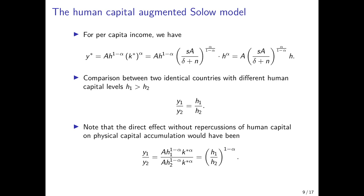Had we used the production function directly without computing steady-state physical capital, the difference would only be determined by differences in human capital raised to the power of 1 minus alpha — a smaller effect. The reason is that differences in human capital between two countries also induce differences in physical capital stocks per worker, even for identical saving rates and productivity. Disregarding this indirect general equilibrium effect would lead to an underestimate of the role of human capital in explaining cross-country income differences.